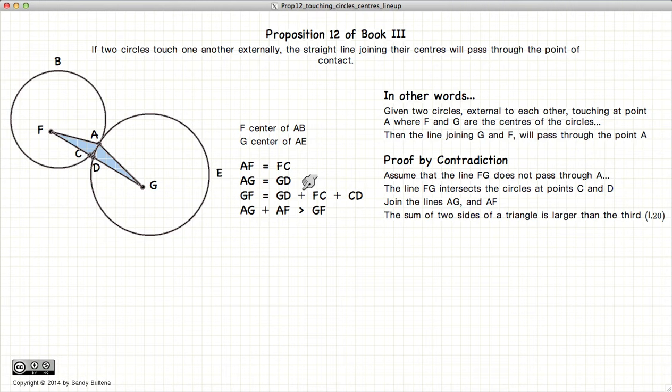Now, if we look at triangle FAG, the sum of FA plus AG will be greater than the third line, FG, according to Proposition 20 of Book 1. So we have AG plus AF is greater than GF.